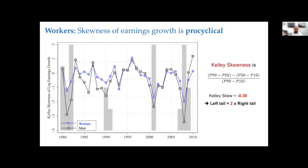We also often use a statistic called Kelly skewness to measure the extent of skewness. It's defined as follows: you take the right tail — the 90th minus the 50th percentile differential — subtract the size of the left tail — the 50th minus the 10th percentile differential — and scale by the overall dispersion. This is a better measure than the third centralized moment because it is robust to outliers and has a simpler economic interpretation.